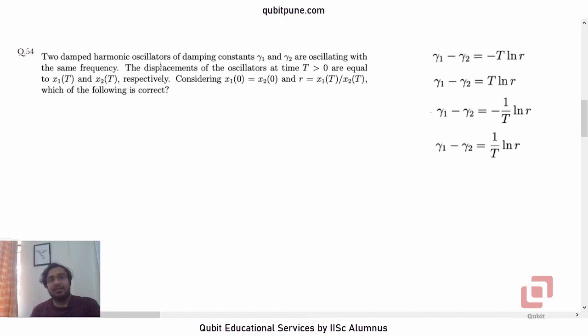The damped harmonic oscillators of damping constants γ₁ and γ₂ are oscillating with the same frequency. The displacements of the oscillators at time T > 0 are equal to x₁(T) and x₂(T) respectively. Considering the initial displacements to be the same, x₁(0) = x₂(0), and R = x₁/x₂, which of the following is correct? We are asked to determine the correct expression for the difference between the damping constants γ₁ and γ₂.